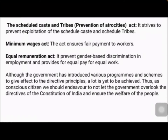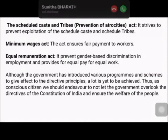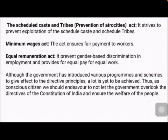The Minimum Wages Act ensures payment to workers regularly. The Equal Remuneration Act prevents gender-based discrimination in employment and provides equal pay for equal work. For example, a mason working with bricks and cement will get 1500 rupees, whereas a woman who carries sand, cement, and pebbles up to the third floor will be paid just 350 to 400 rupees. This act aims to bring equal remuneration to both men and women — it should be equal.